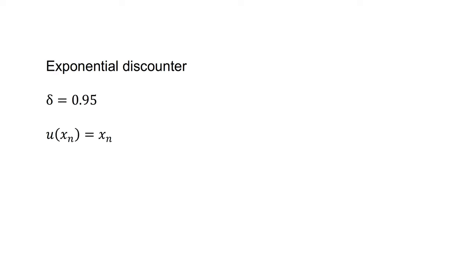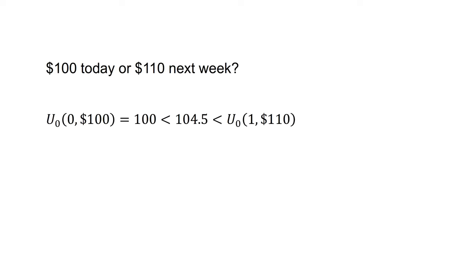The exponential discounter has delta equals 0.95 and utility each period of u(x) equals x. Would the exponential discounter prefer $100 today at t equals 0 or $110 next week at t equals 1? The utility of $100 today, u(0, 100), equals 100, which is less than 104.5, the utility of $110 in one week, u(0, 1, 110). The exponential discounter will prefer to receive $110 next week as it leads to higher discounted utility.